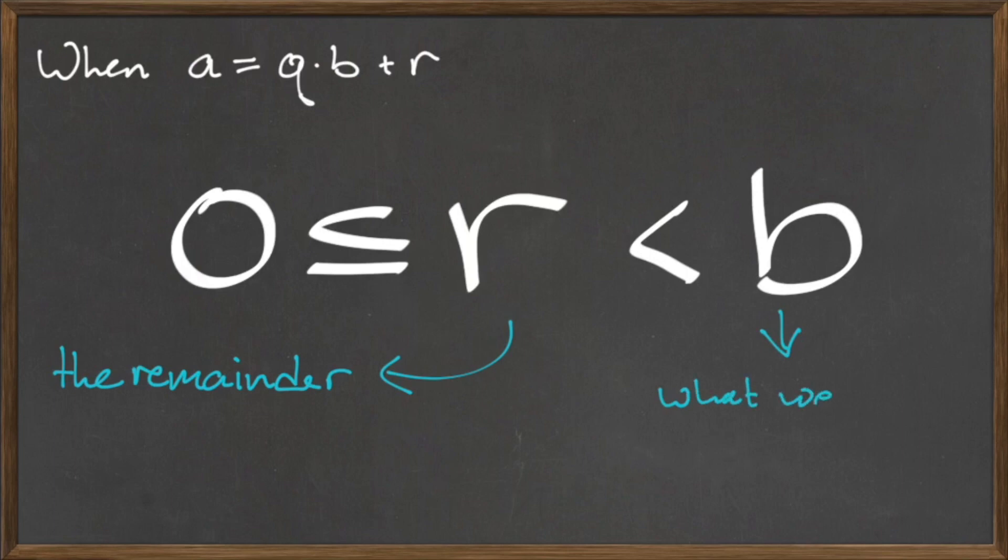We'll conclude this video by making an important note about the remainder. When dividing a by b, we write a is equal to q times b plus r, but there are only certain values that the remainder r can have.